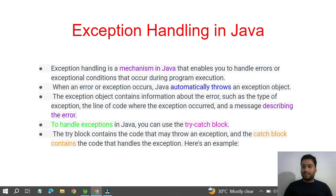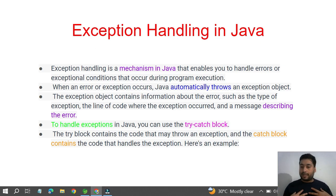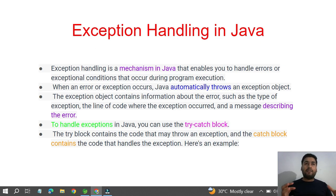When an error or exception occurs, Java automatically throws an exception — you don't have to write anything for that. For example, you may have seen ArrayIndexOutOfBoundsException or StringIndexOutOfBoundsException. If a particular index is not available, it throws an exception automatically. We haven't handled those yet, but once you learn exception handling you can write code to prevent and protect your code when exceptions occur.